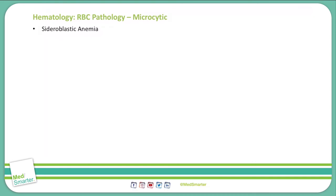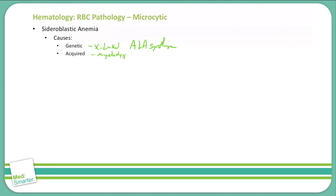Sideroblastic anemia has three different causes. The first is genetic: an X-linked defect in the ALA synthase enzyme. It can also be acquired in myelodysplastic syndrome. The most common reversible cause is alcohol, but it can also be seen with lead poisoning, vitamin B6 deficiency, copper deficiency, and drugs such as isoniazid or linezolid. Don't always assume alcohol, as there are multiple potential causes.